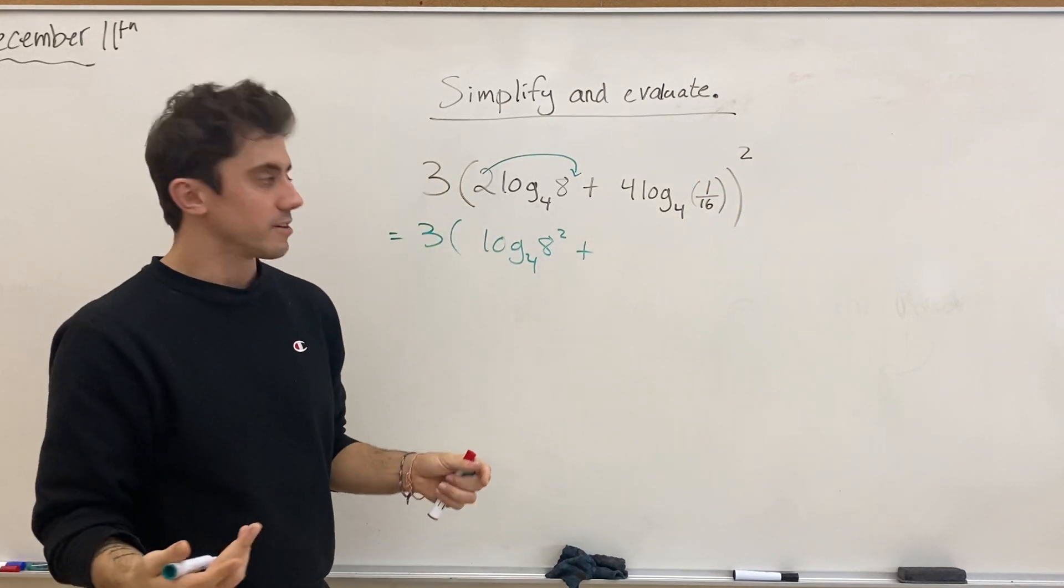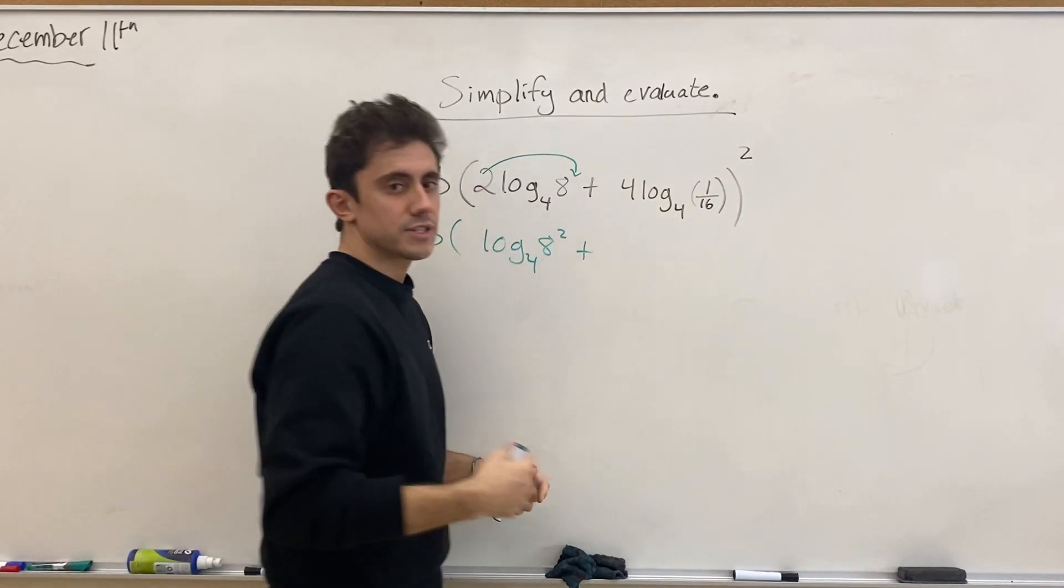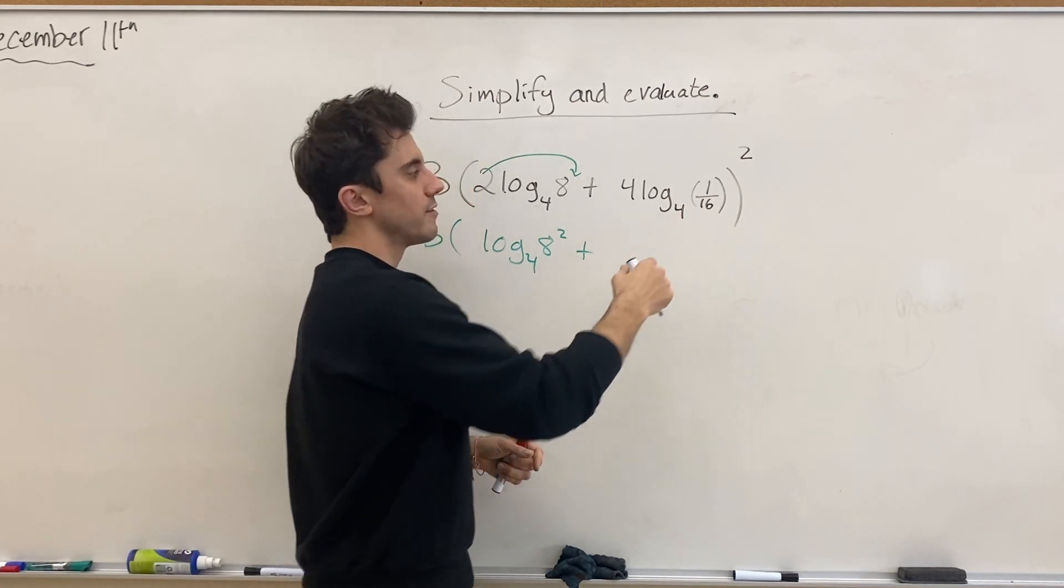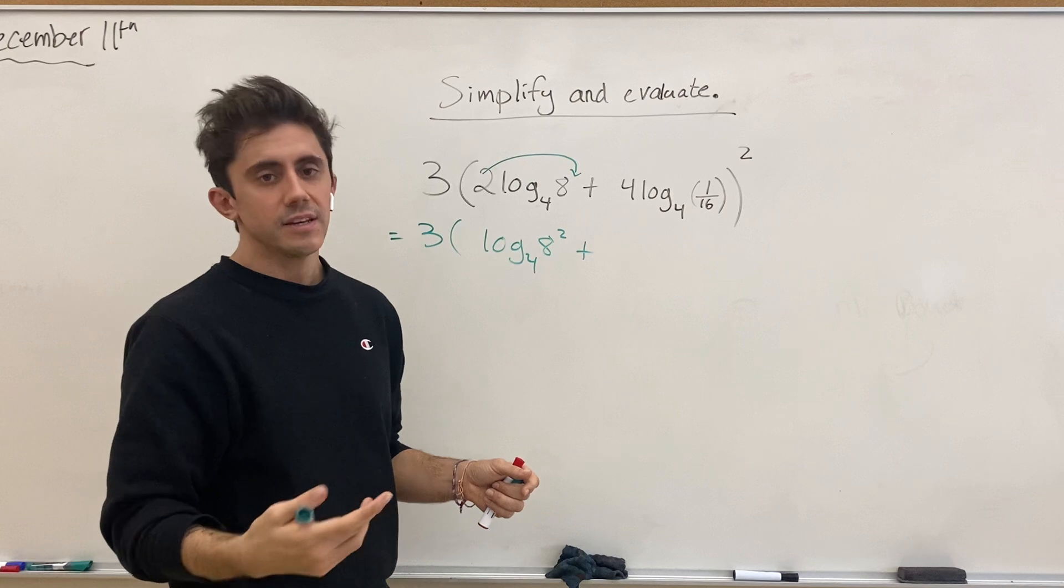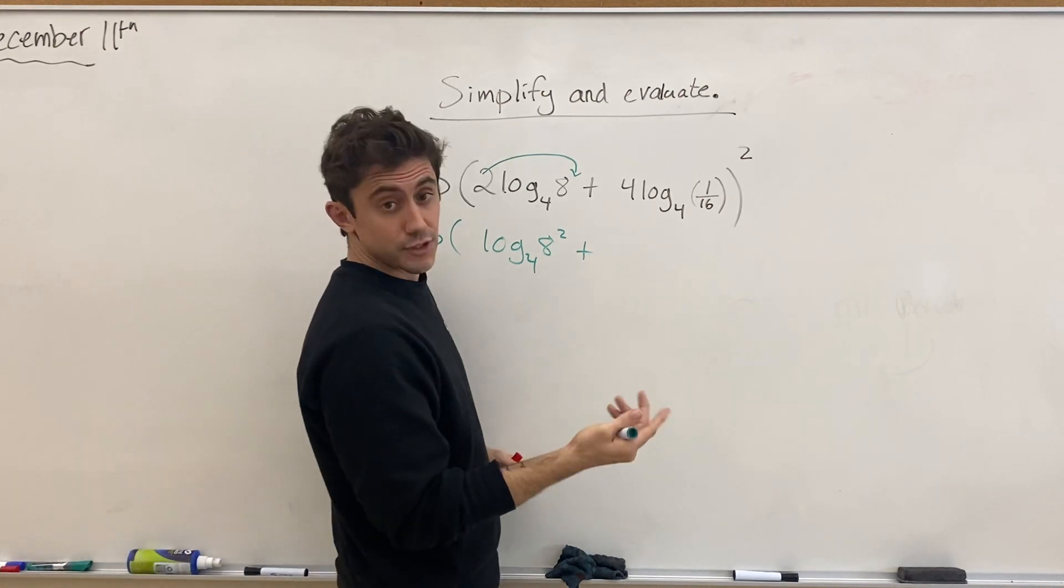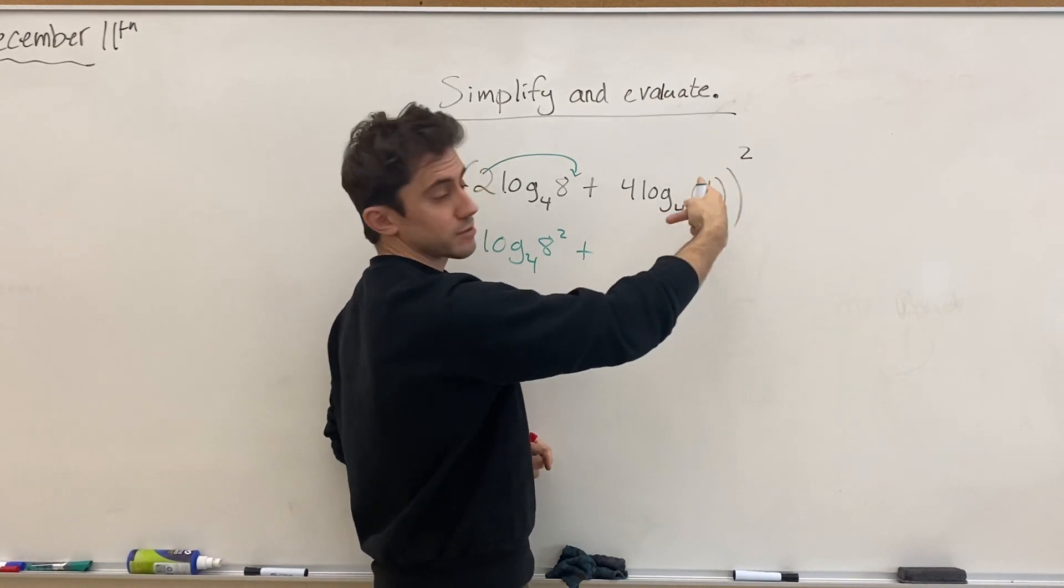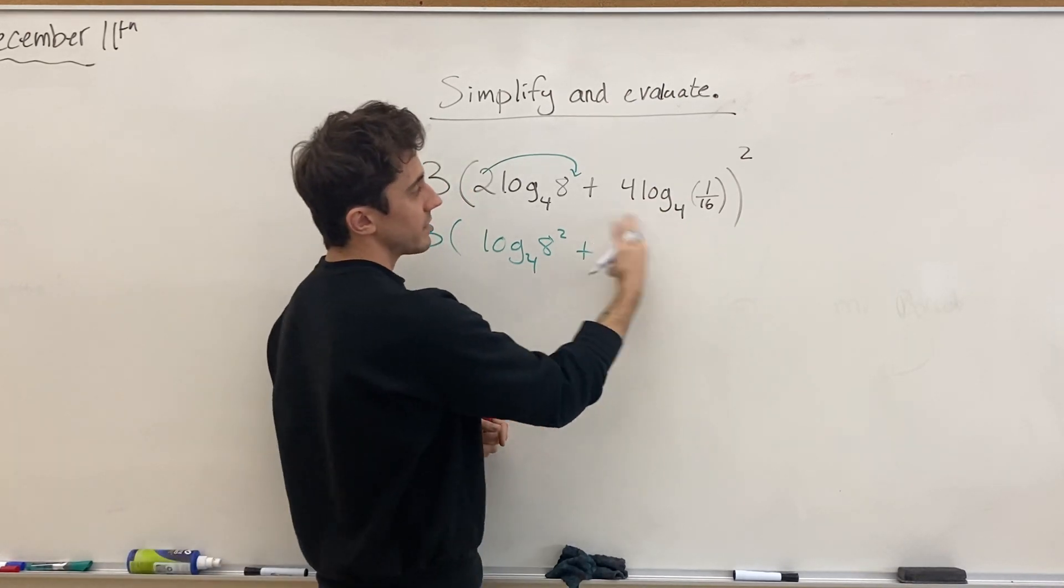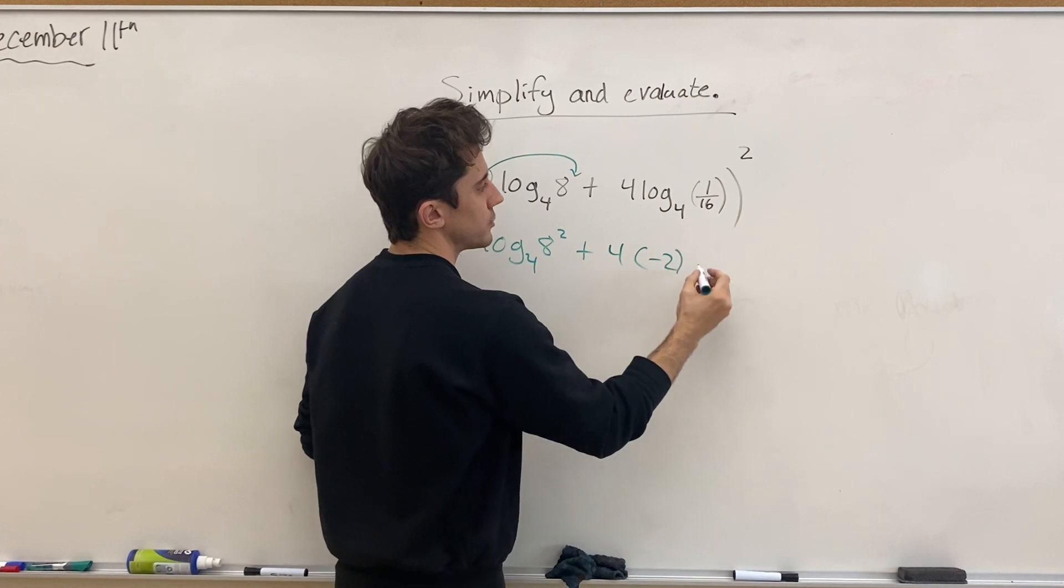Again, we're reminding ourselves that the log poses the question: what do we have to raise 4 to the power of for it to become 1 over 16? And we know the answer to that is negative 2, right? Negative to get the reciprocal, and then square to get the 4 to the 16. And so we can make this 4 times a value of negative 2.